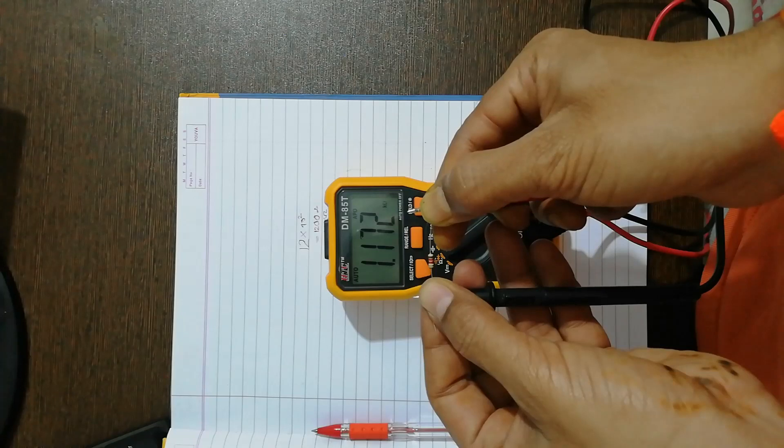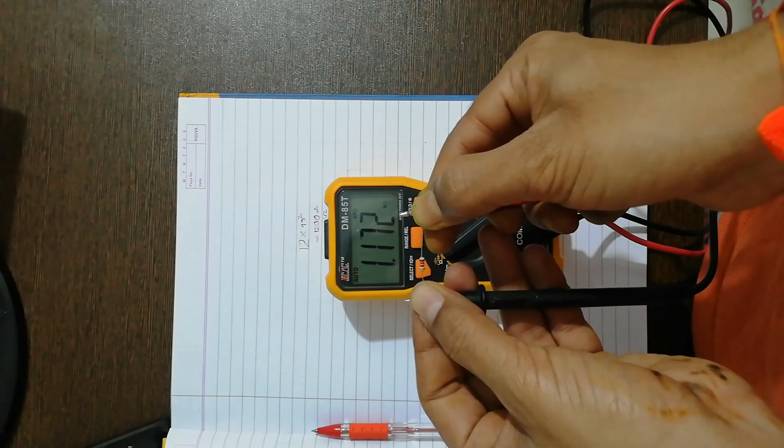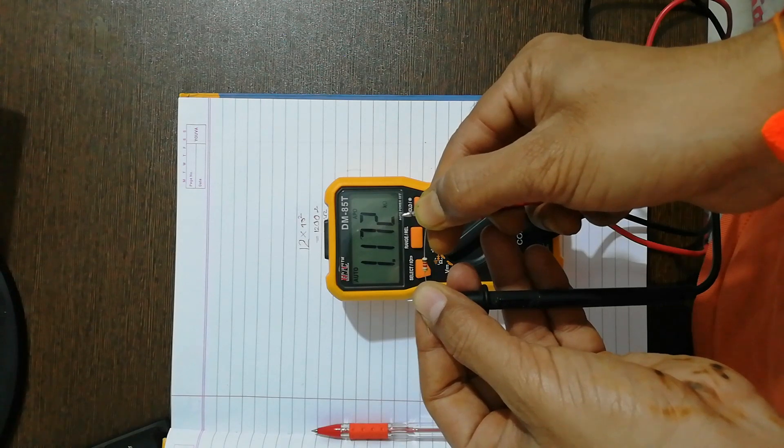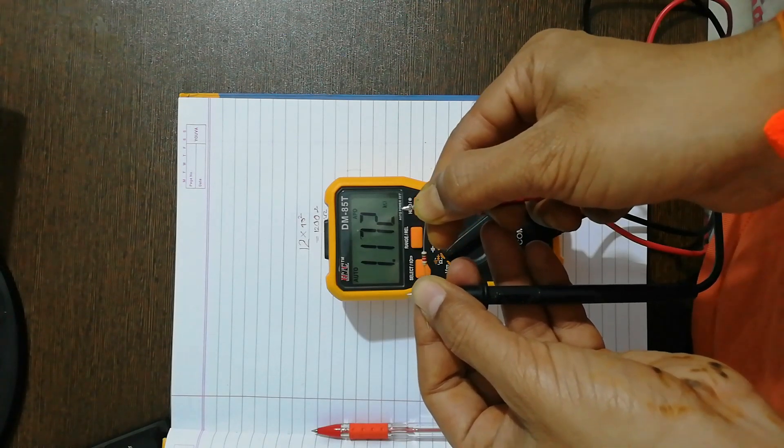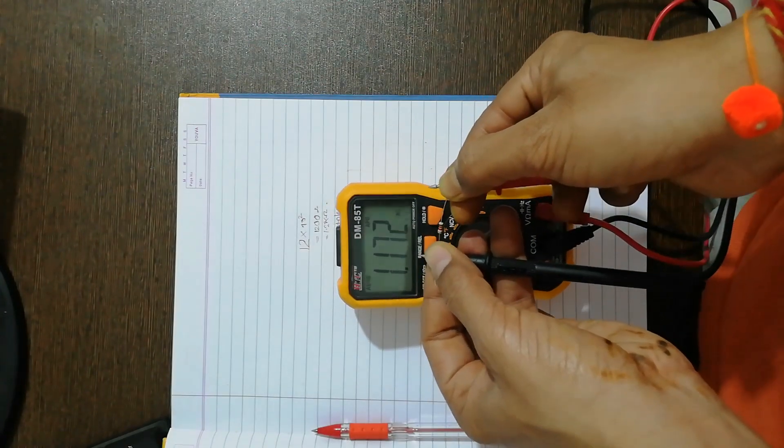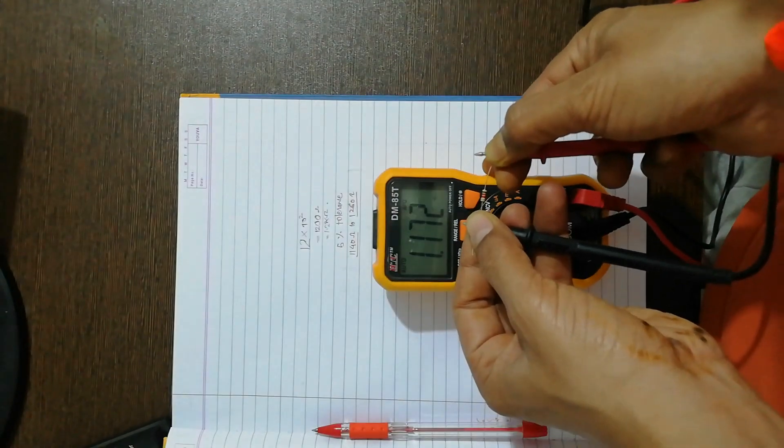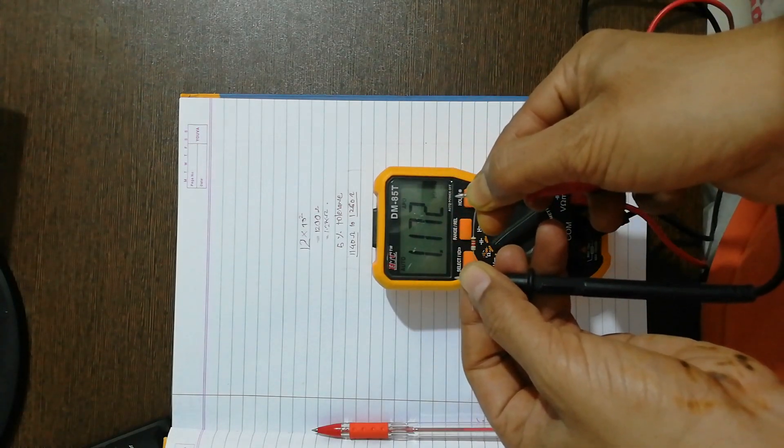And I see the value is 1172 ohms or 1.172 kilo-ohms, so which is pretty close to the value I calculated with hands or from the color code. So the value I calculated is 1200 ohms and the value I am measuring is 1172 ohms.